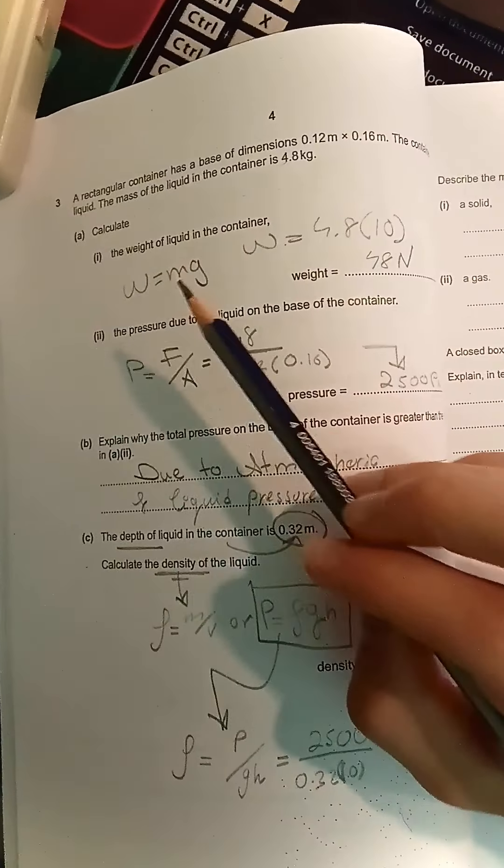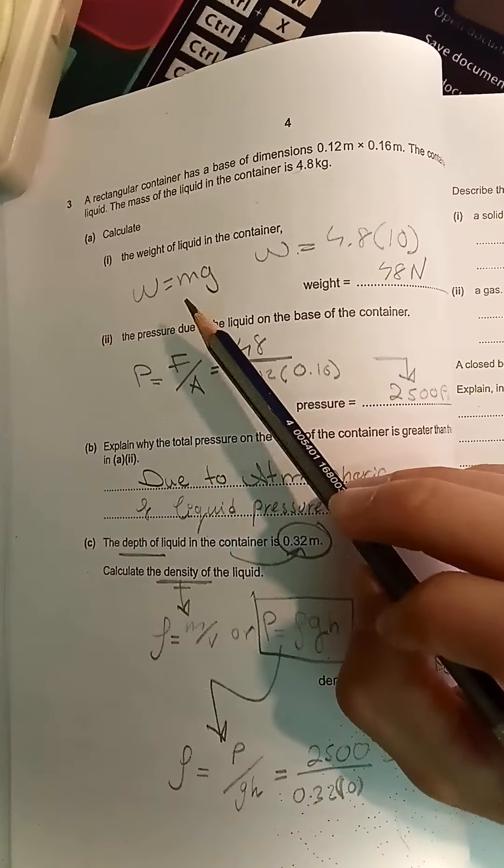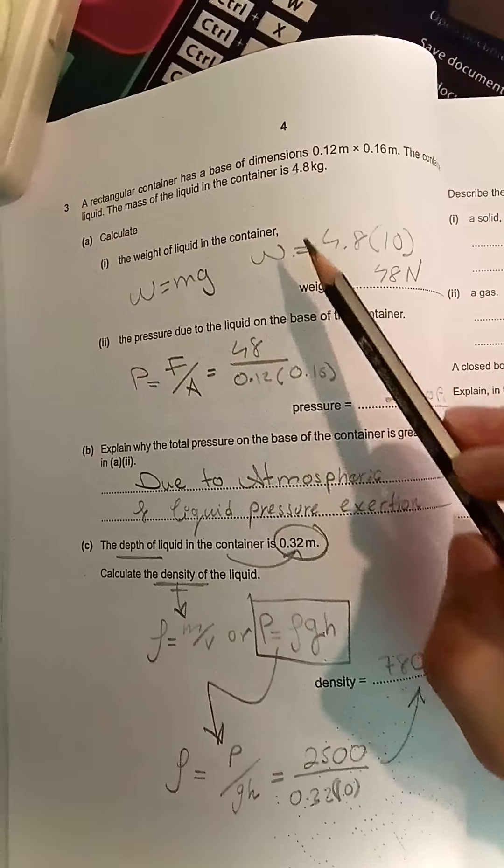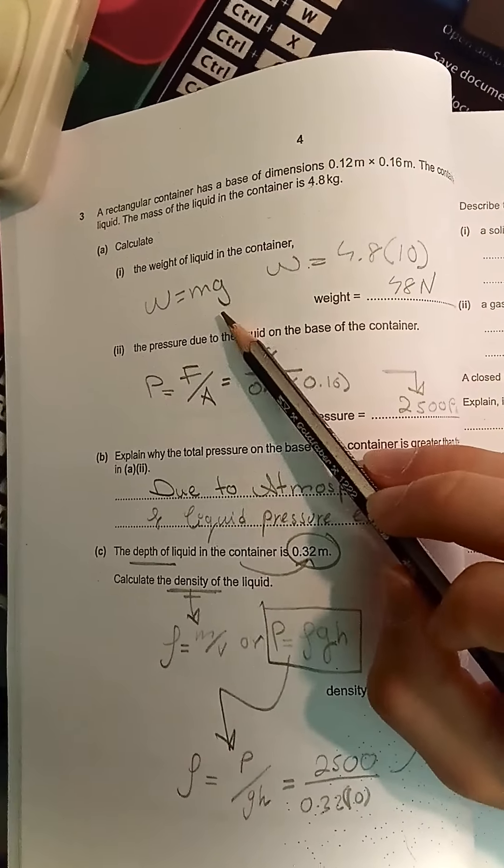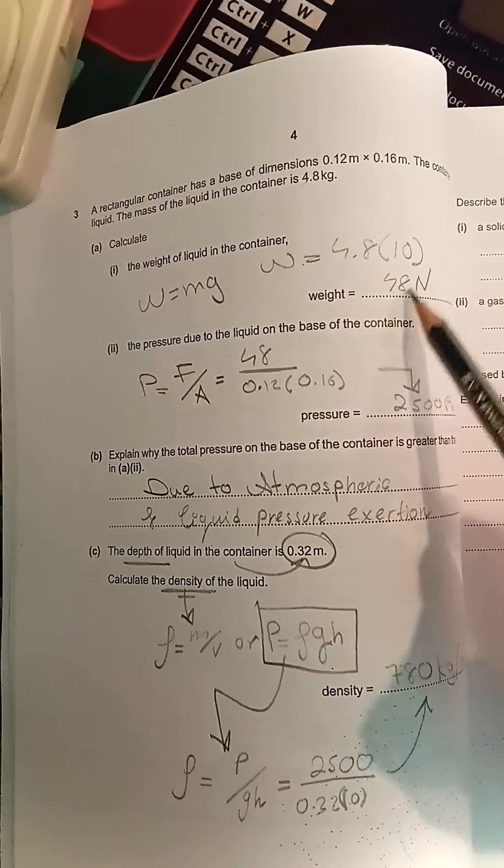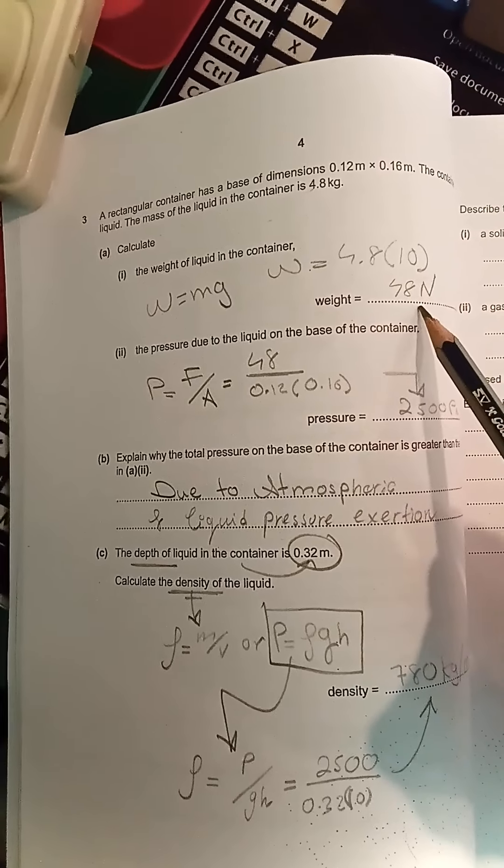Calculate the weight of the liquid in the container. Weight is equal to mass times gravitational field. The mass is 4.8 kilograms, and the gravitational field is 10. So 4.8 times 10, the weight is 48 Newtons. Newton is the SI unit of weight and force.